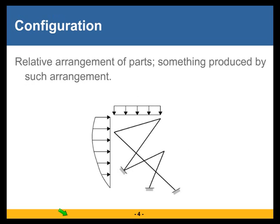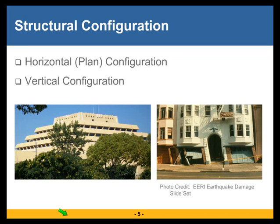When we talk about irregularities, it is irregularities in the configuration of a structure. What does configuration mean? Relative arrangement of parts — something produced by such arrangement. So this is basically what configuration means: how the parts of a structure are arranged, and if the arrangement is irregular, then there are consequences when it comes to seismic performance. That's basically the topic today.